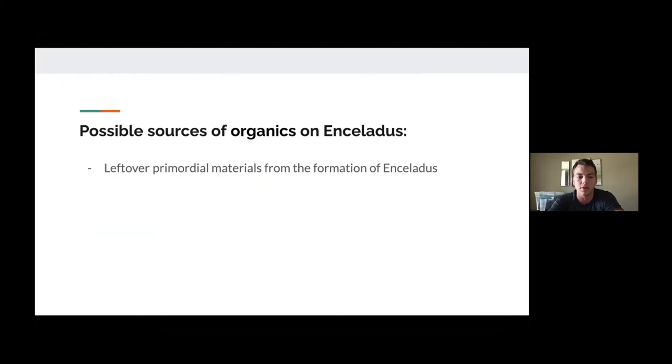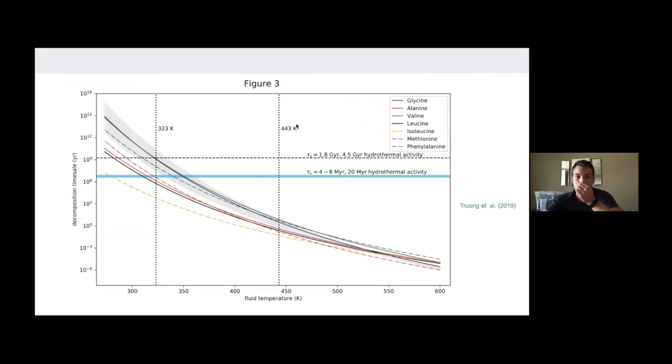The first thing we considered was they might be left over from the initial formation of Enceladus. Upon a quick investigation into the current literature, we determined that this was probably not likely. As you can see in this figure here, we've got the decomposition timescale of amino acids on the y-axis and the fluid temperature indicated by the hydrothermal temperature on the x-axis. There's a very clear relationship between how fast these amino acids decompose and how hot the fluid is.